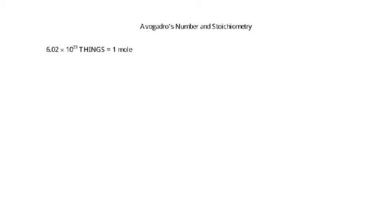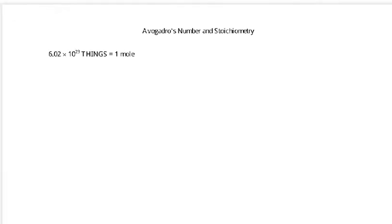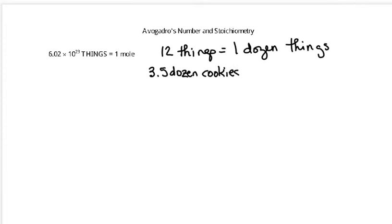This conversion factor is exactly equivalent to the fact that there are 12 things in one dozen things. It's exactly the same thing. So if I asked you to go to the store and buy 3.5 dozen cookies, but you got to the store and they only sold them by ones, you couldn't buy a dozen, you could only buy ones.